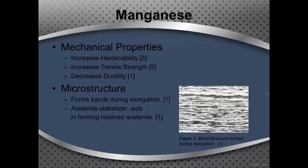Another element that can be added to steel is manganese. The mechanical properties it affects include hardenability, which tends to increase, as well as tensile strength, which increases while ductility decreases. The microstructural effect that manganese has on steel is that it tends to form bands during elongation, as pictured in figure 2. It is also an austenite stabilizer, so it aids in forming retained austenite. Austenite is a softer material, so in many cases this could be seen as undesirable. These bands form because manganese doesn't fully homogenize — it segregates near carbon during casting, and manganese also diffuses slowly during homogenization. These combined effects cause the bands to form, which decrease ductility.